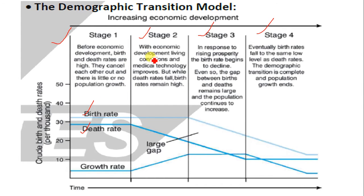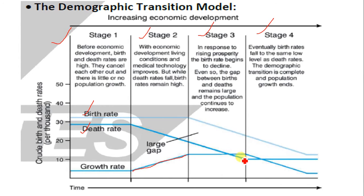In stage two, with economic development, living conditions and medical technology improve. Death rate falls while birth rate remains high. As death rate decreases because of improvement in medical technologies, the population growth begins to increase exponentially. Then in stage three, in response to rising prosperity, the birth rate begins to decline. Even so, the gap between birth and death rate remains large and the population continues to increase. Birth rates begin to drop, death rates drop further, and population still increases, but not as exponentially as in stage two.